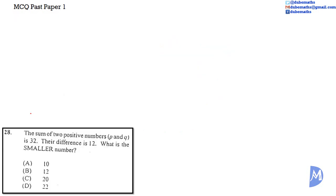Question 28. The sum of two positive numbers, P and Q, is 32. Their difference is 12. What is the smaller number? Is it A, 10? Is it B, 12? Is it C, 20? Or is it D, 22?